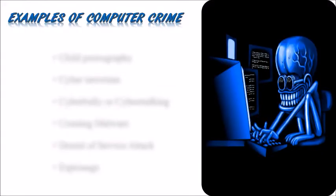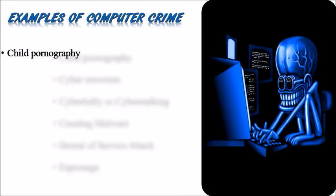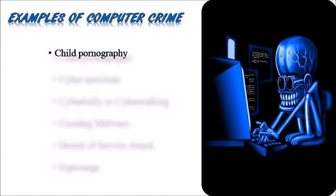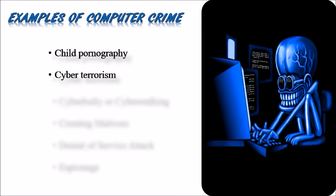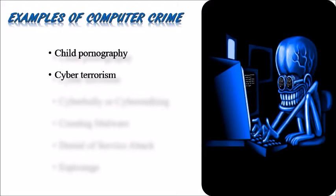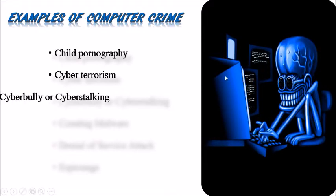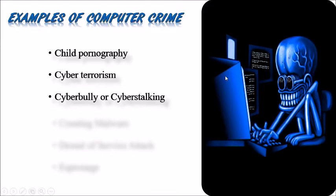Here I am listing some different types of computer crime. The first one is Child Pornography, which means making or distributing child pornography. Hacking, threats, and blackmailing towards a business or a person — this act is called Cyber Terrorism. Harassing others online — this act is called Cyber Bullying or Cyber Stalking.